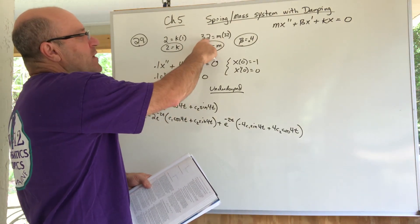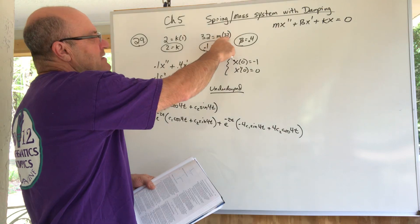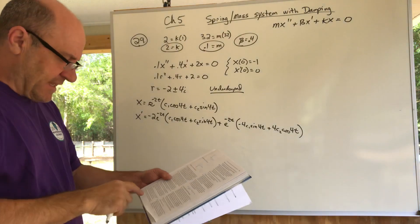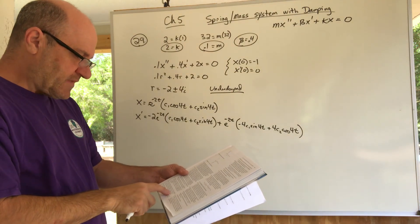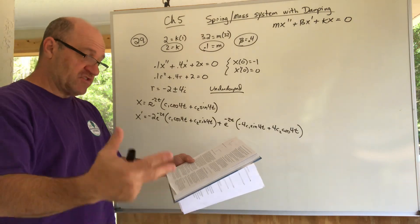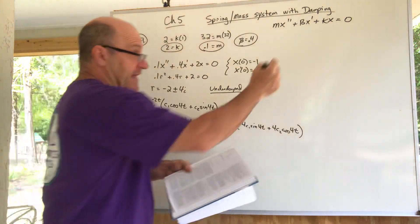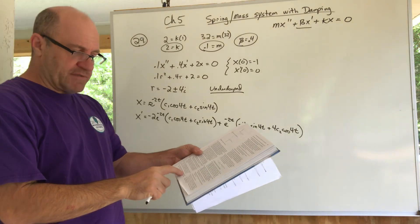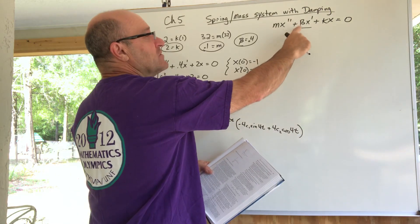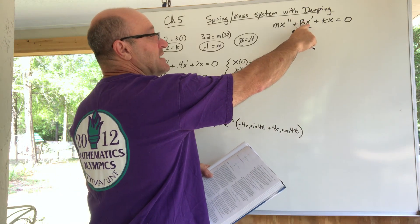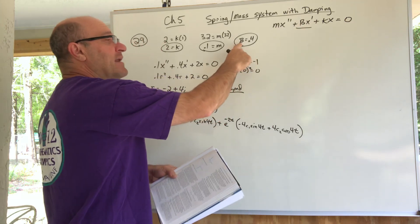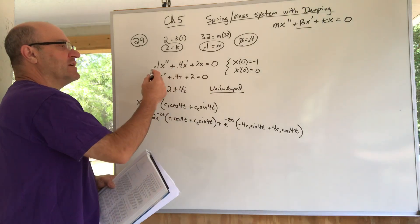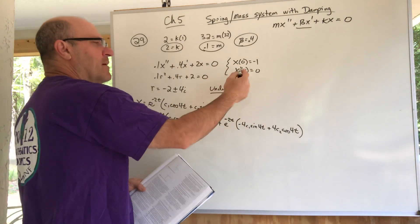We have a mass weighing 3.2 pounds — mass times gravity gives us M = 0.1. The system is immersed in a medium that offers a damping force numerically equal to 0.4 times the instantaneous velocity, so beta = 0.4. Now I have M, beta, K, and the differential equation, plus a couple of initial conditions.